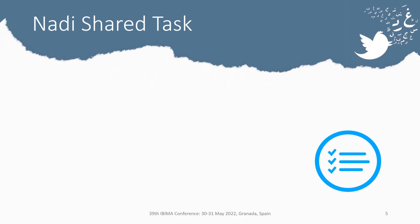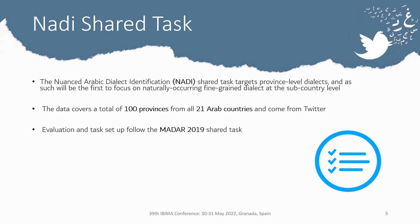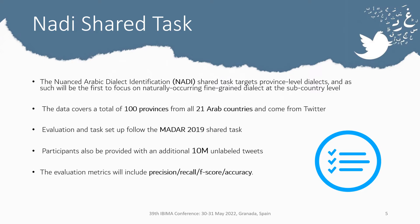What motivated this research was our participation in the NADI shared task, which targets province-level dialects and is the first to focus on naturally occurring fine-grained dialects at the sub-country level. The data covers 100 provinces from all 21 Arab countries and comes from Twitter. Evaluation follows the MADAR 2019 shared task setup, and participants were also provided with an additional 10 million unlabeled tweets. Evaluation metrics included precision, recall, F-score, and accuracy, with micro-averaged F-score as the official metric.